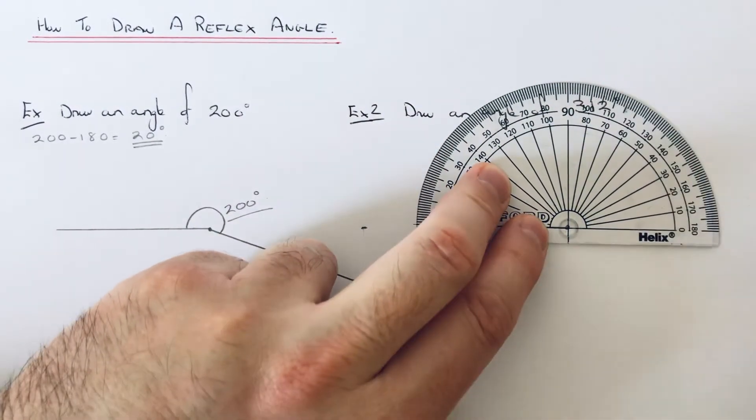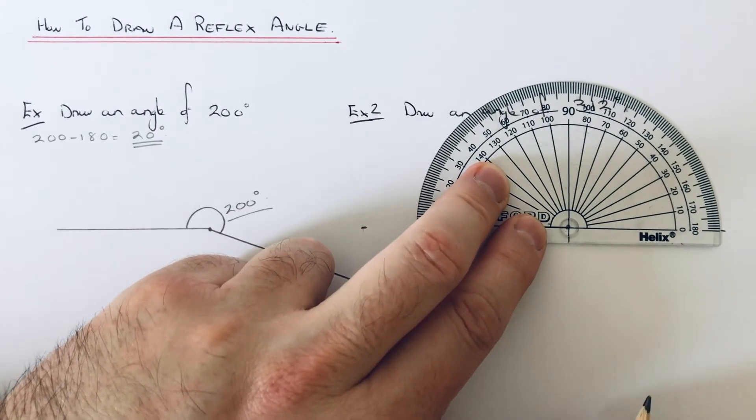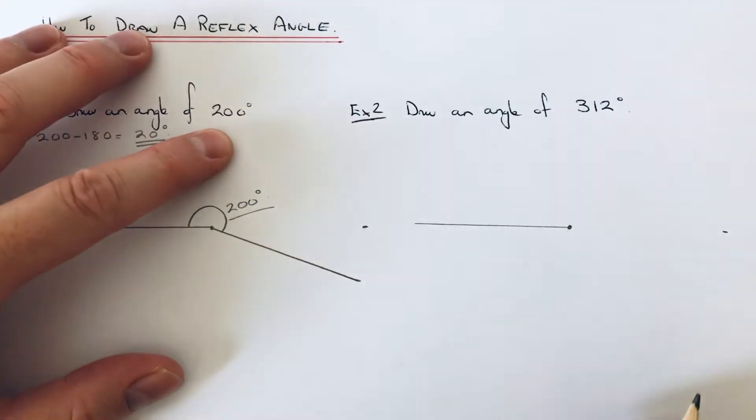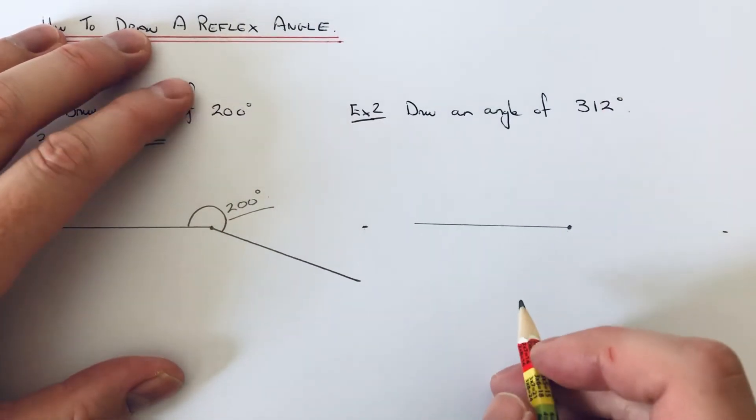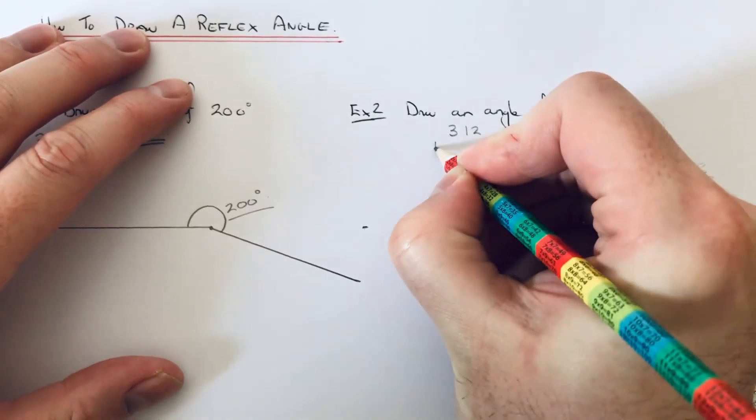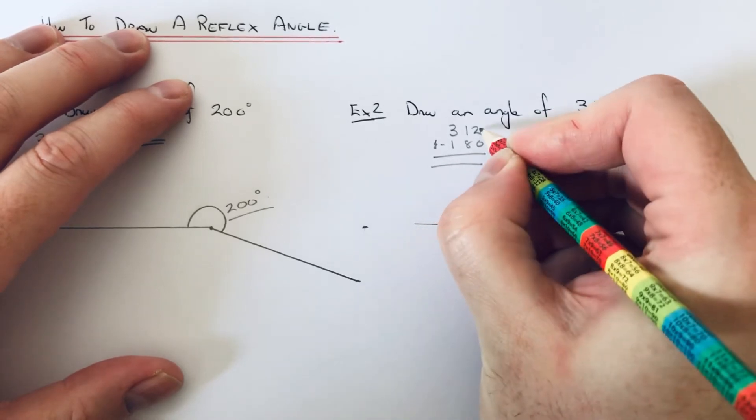We know halfway around is 180, so put a little marker there. We just need to figure out how much more we need to measure, so we can do that by taking 180 off 312.